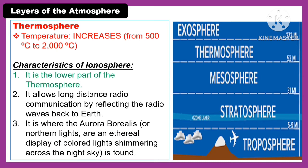In the thermosphere, the ionosphere is the lower part of the thermosphere. It allows long-distance radio communication by reflecting radio waves back to Earth. It is also where the aurora borealis, or the northern lights — the ethereal display of colorful lights shimmering across the night sky — is found.